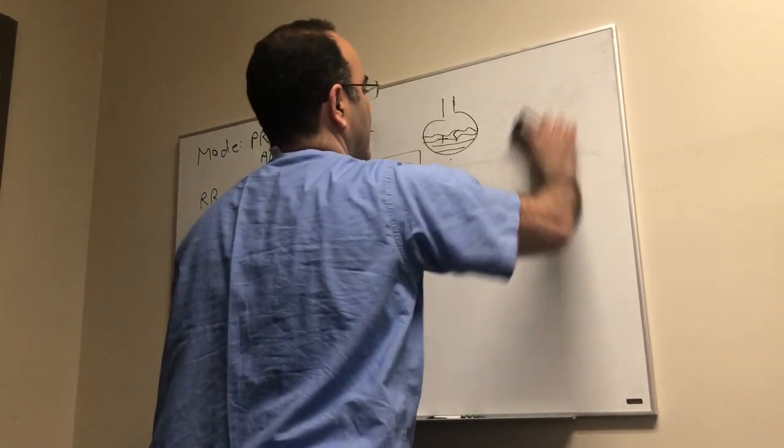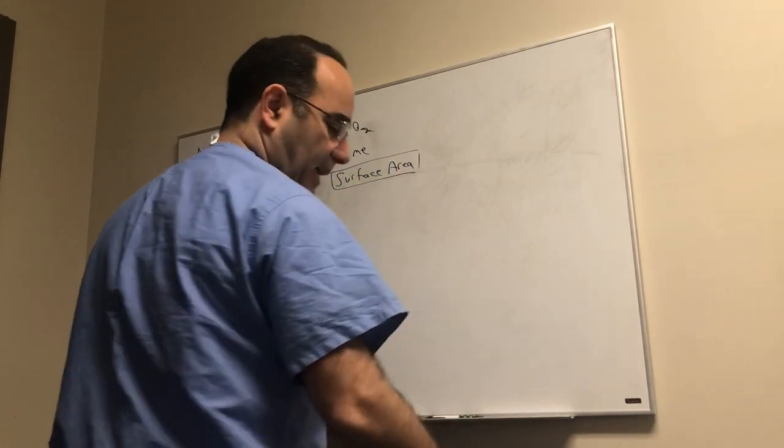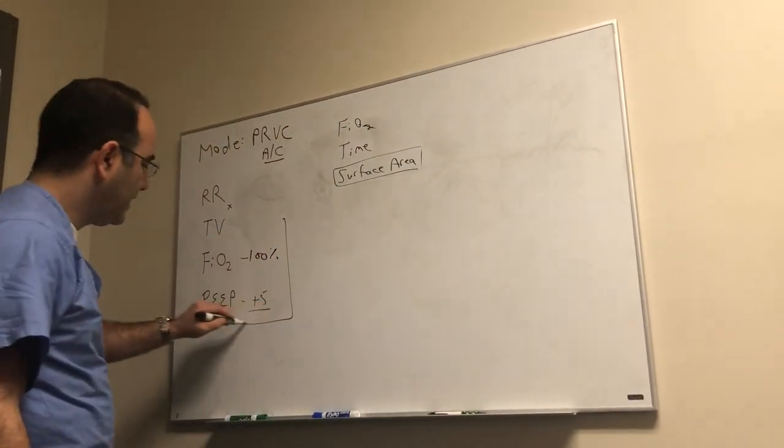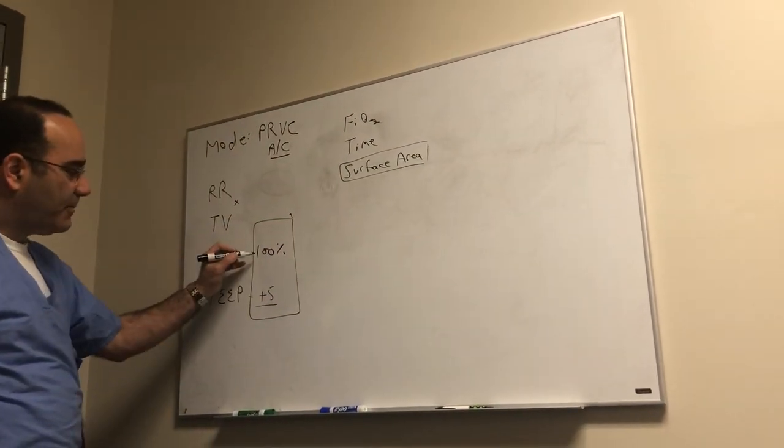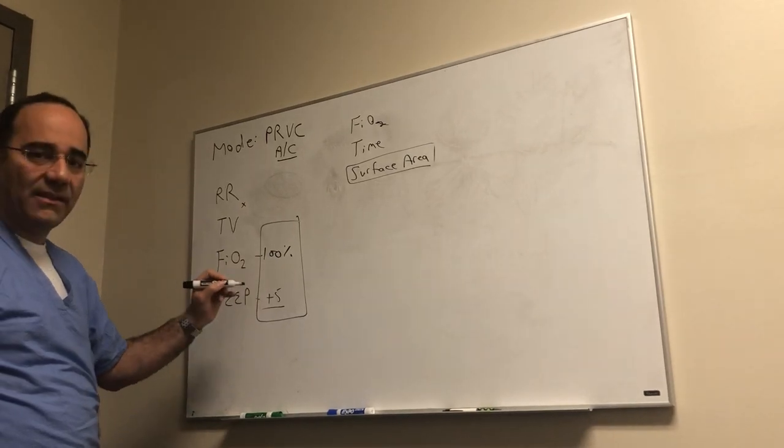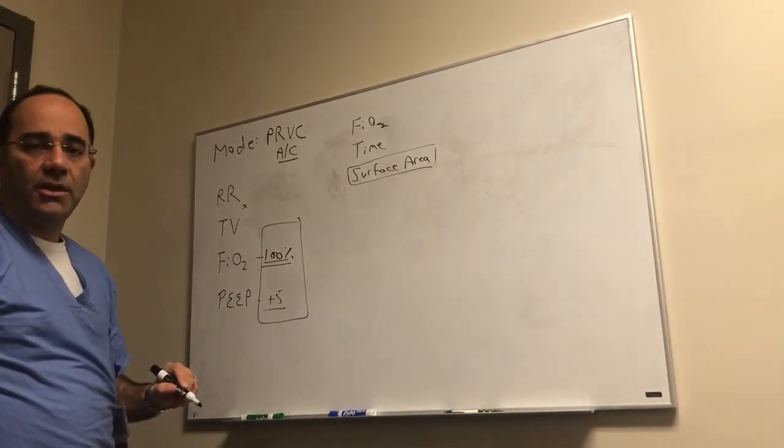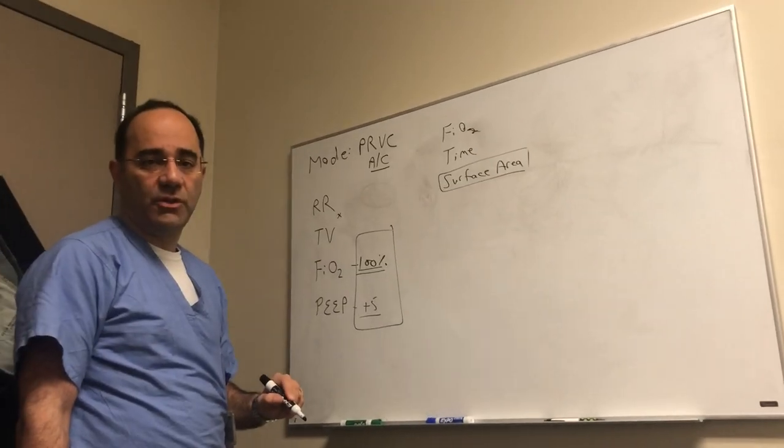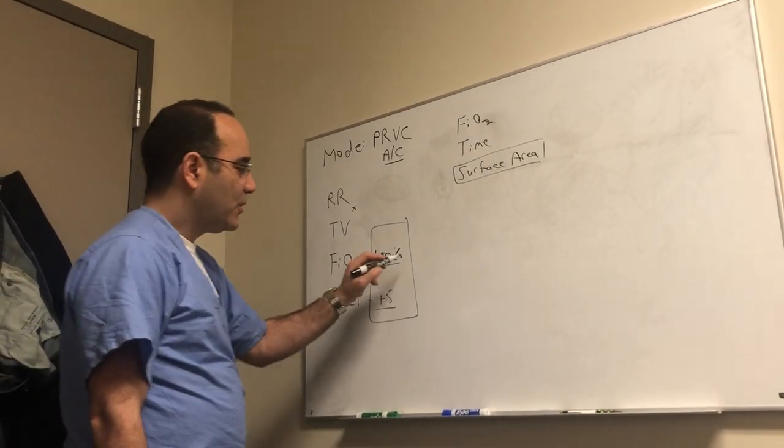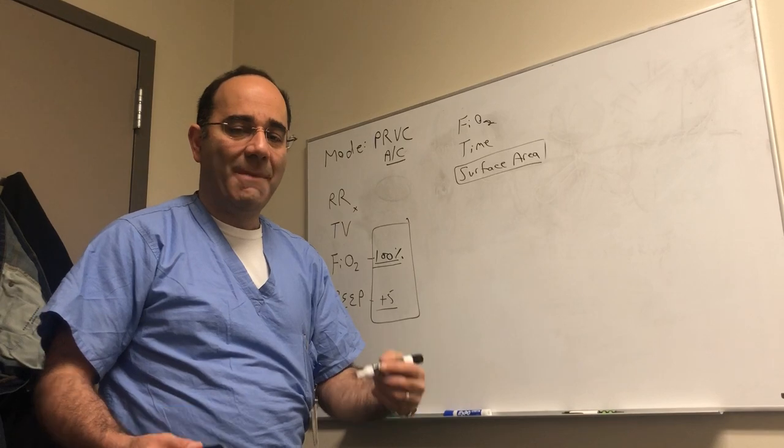What you don't want to do, here's what failure looks like. Do not do this. Failure is dialing in a setting that looks like that. If you're at 100 percent FiO2 with five of PEEP and then the guy desaturates, you have no place to go. You've already used up your rapid deployment force which is FiO2.